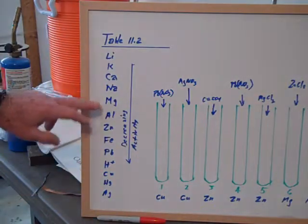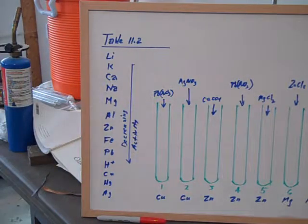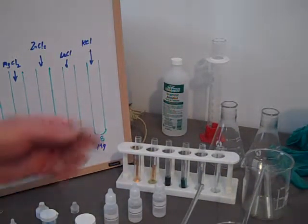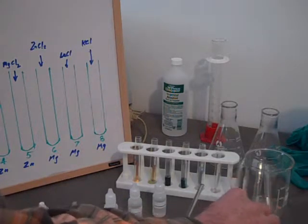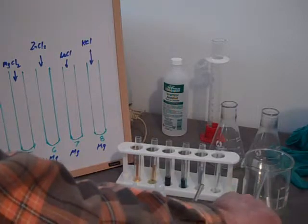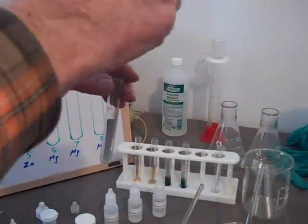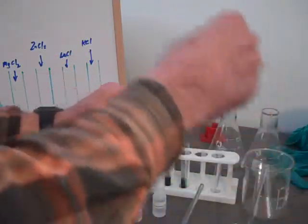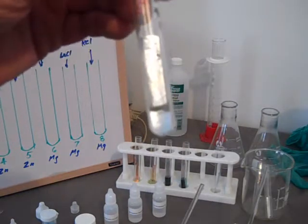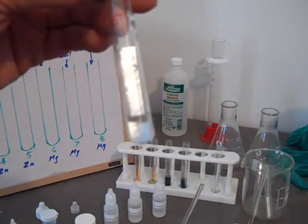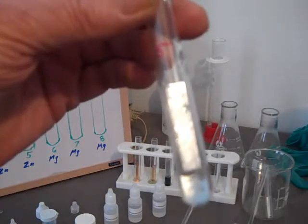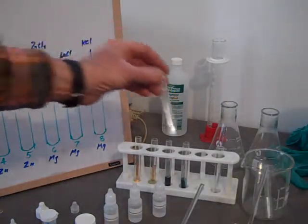Now we're going to do number 5, zinc and magnesium. But zinc is lower than magnesium, so we shouldn't get a reaction. Let's take a look and see what happens as we add magnesium sulfate, because we don't have any magnesium chloride, to test tube number 5. And certainly for the time being, we're getting no reaction. That's what we predicted. That's fine. So zinc will not replace magnesium. Magnesium is pretty high on the activity series.